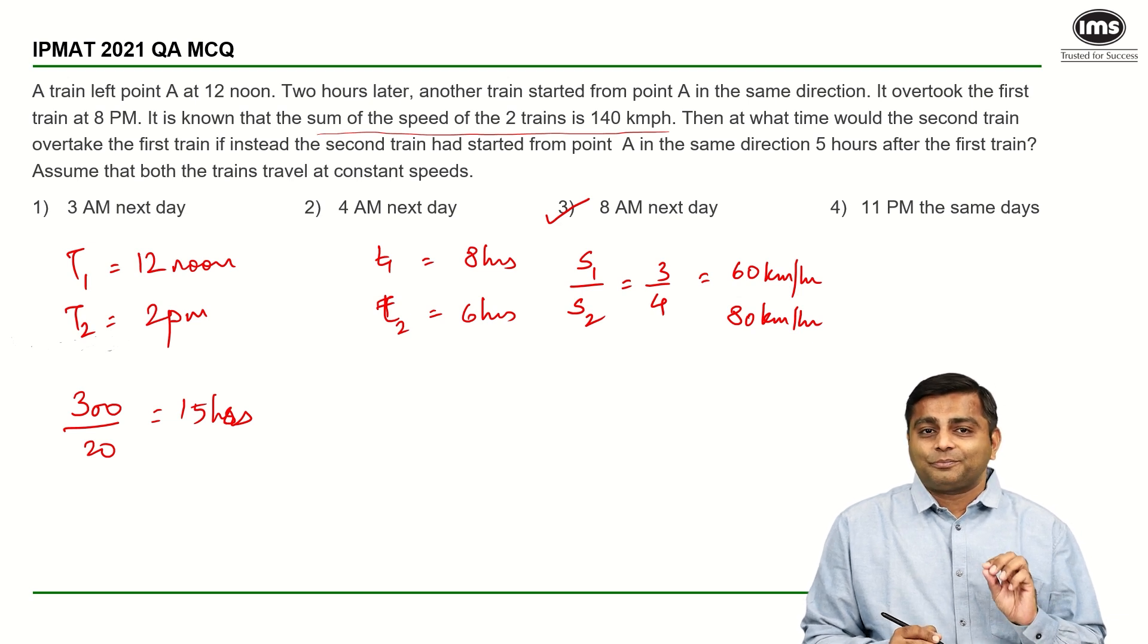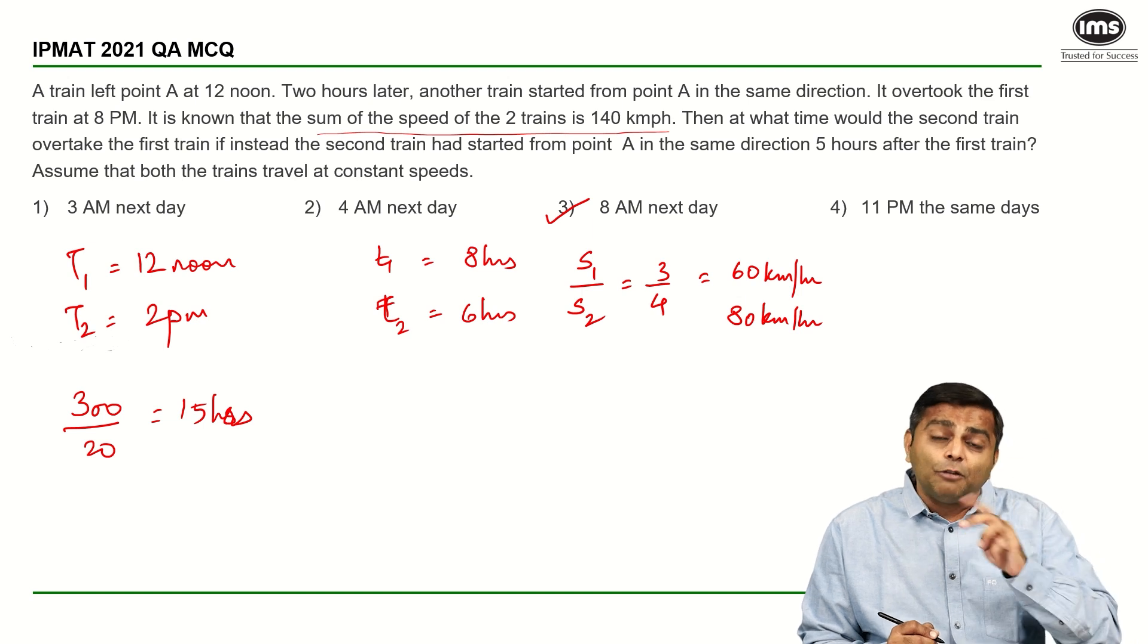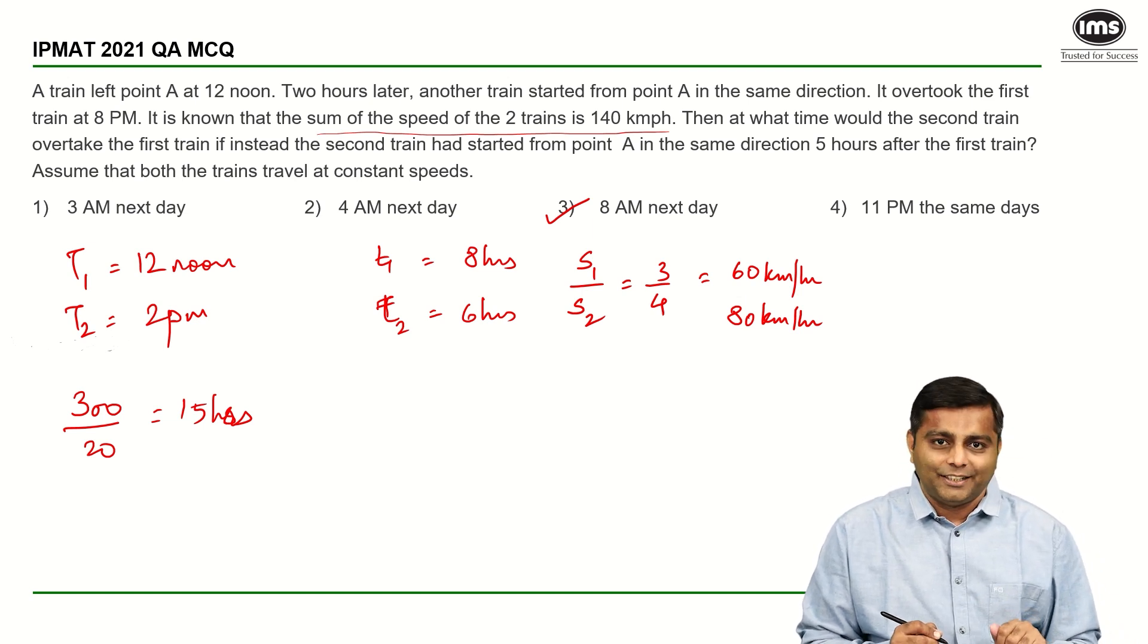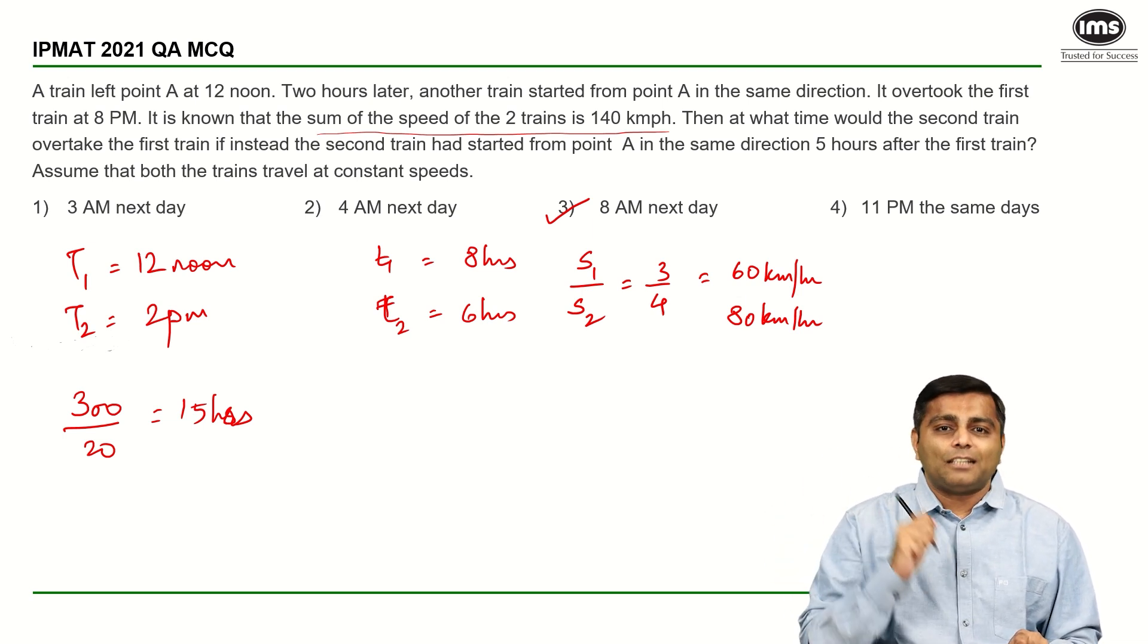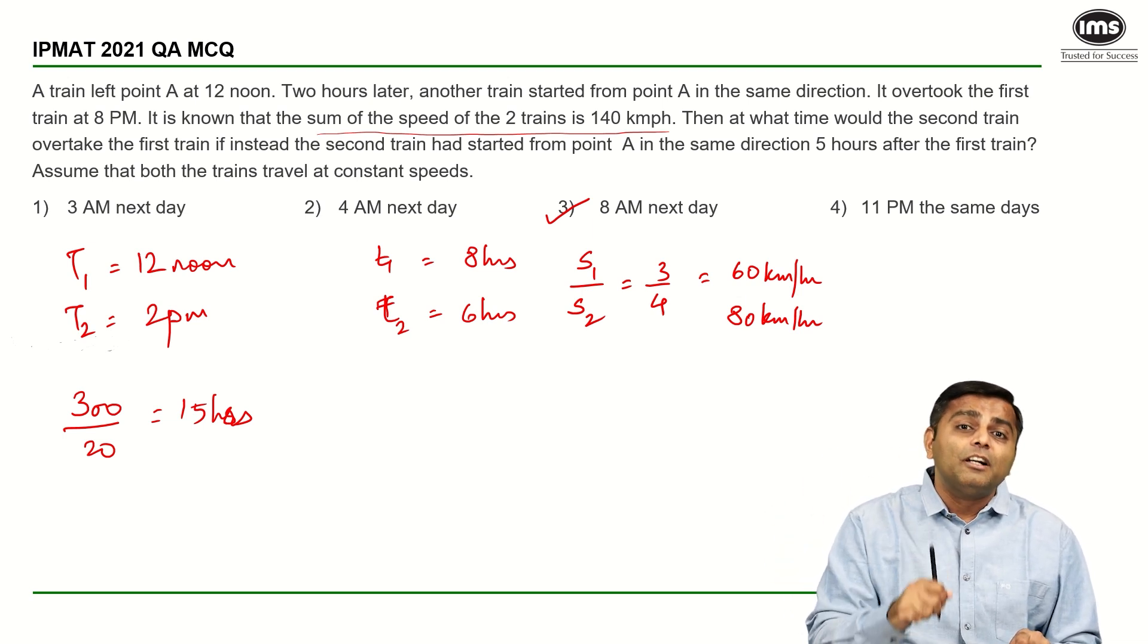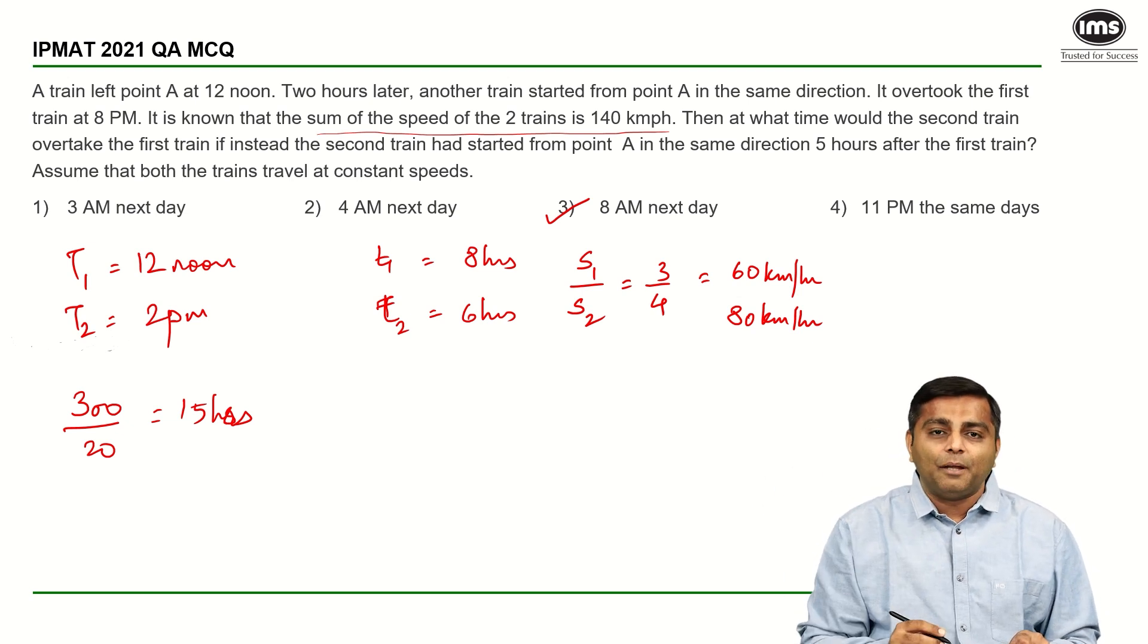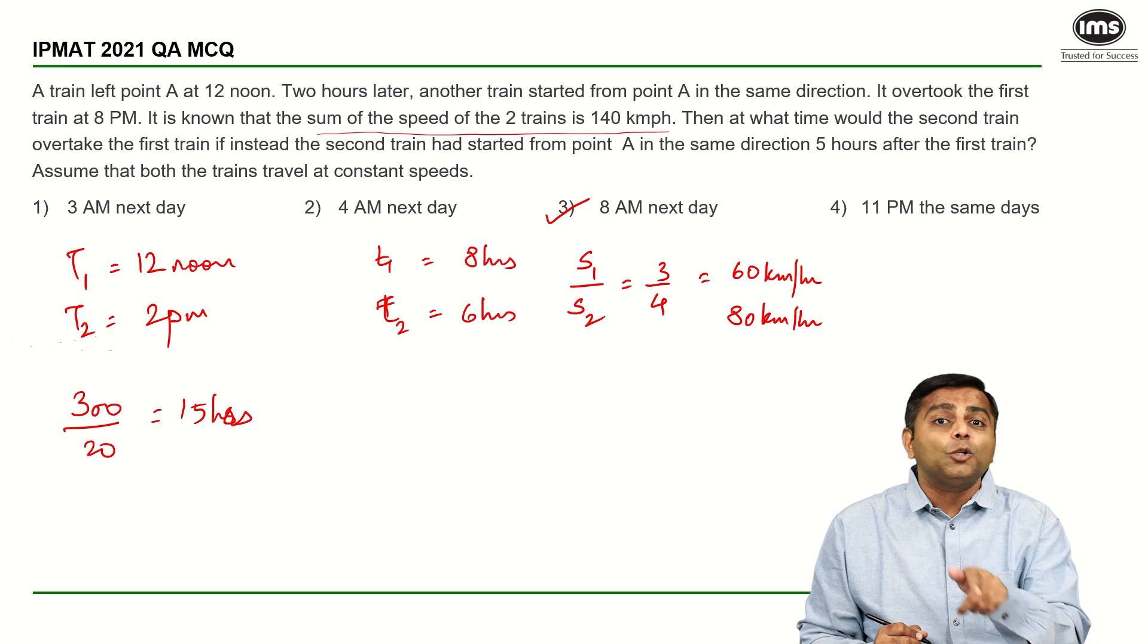Now, understand that initially in the first case, the train had started 2 hours after the first train, and they met after train 2 travelled for 6 hours. They started at 2 pm and they met at 8 pm. So, when the train starting difference is 2 hours, it took 6 hours.